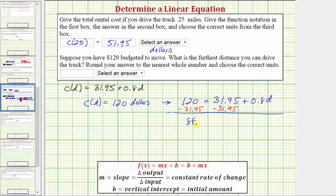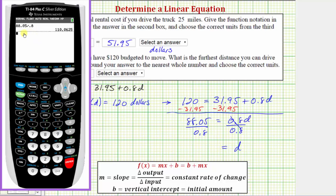So we have 88.05 = 0.8D. Divide both sides by 0.8, and simplifying, we have D = 88.05 ÷ 0.8 = 110.0625.